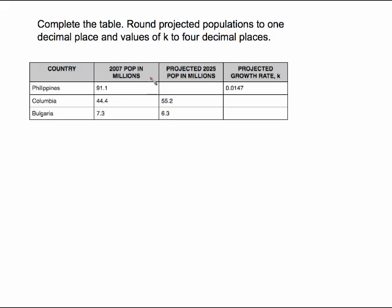So if I want to complete this, I have to use my formula A equals A sub zero E to the KT and plug in the information I know to find the Philippines. I've got the population in 2007 and I have the growth rate K. I want to predict what it is in the year 2025. So this is A equals A sub zero, which is 91.1, E to the K 0.0147 times the number of years from 2007 to 2025, which is 18.